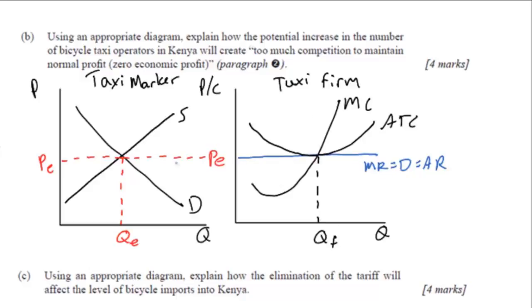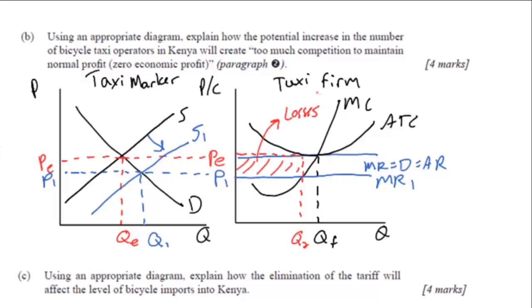In any theory of the firm question, you must draw a marginal cost, average total cost and label the firm's profit maximizing quantity. When new firms enter, the supply increases lowering the price, reducing the marginal revenue and taking a firm from earning normal profits to earning economic losses.